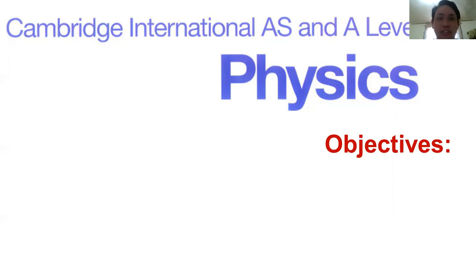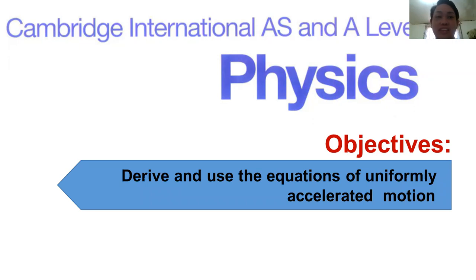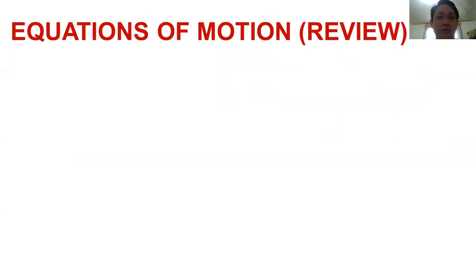Our topic this afternoon is just connected to what we talked about last time — still connected to solving. Our objectives are: we are going to derive and use the equations of uniformly accelerated motion, and we are going to describe a method for determining the acceleration due to gravity, denoted as g. To start, let's have a review first.